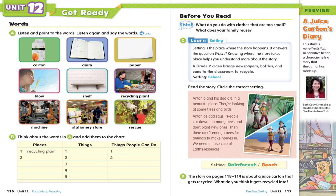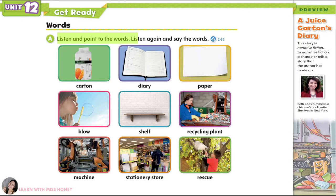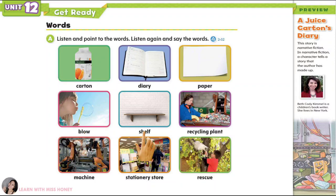Unit 12: A juice carton's diary. Get ready. Words. Listen and point to the words. Listen again and say the words. Carton. Diary. Paper. Blow. Shelf. Recycling plant. Machine. Stationery store. Rescue.